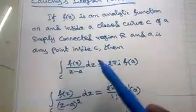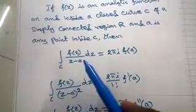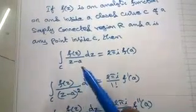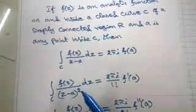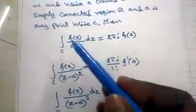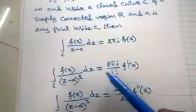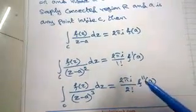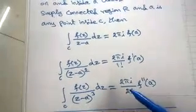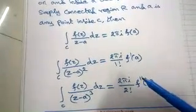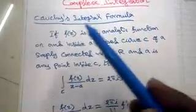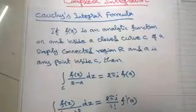Cauchy's integral formula for a derivative applies when the denominator power is more than 1 — that is, 2, 3, etc. If the denominator power is 1, no derivative. If the denominator power is 2, use 1 factorial and 1st derivative. If the denominator power is 3, use 2 factorial and 2nd derivative. In general, if it is n, use (n-1) factorial and the (n-1)th derivative.